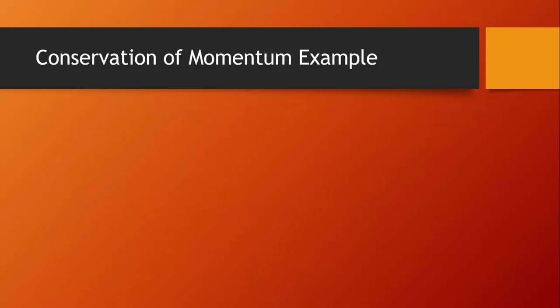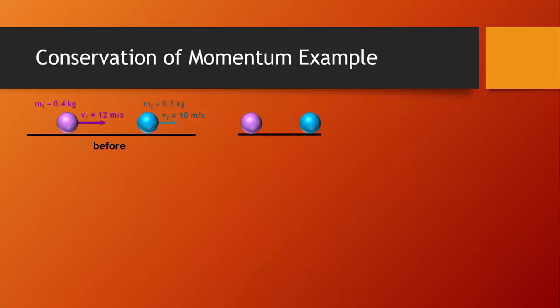Here's an example of a problem that involves the conservation of momentum. We have a purple ball of mass 0.4 kilograms traveling 12 meters per second toward a blue ball that is 0.3 kilograms traveling only 10 meters per second. Since the purple ball is traveling faster, it's eventually going to collide with the blue ball, and afterward they'll both be moving in the same direction, but their velocities are going to be different.